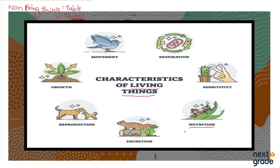The first characteristic is nutrition. Living things need food in order to perform their life processes. Food gives them energy, and every living organism needs food for their nutrition. For example, humans can eat plants and animals. Grasshoppers feed on plants. Plants take energy from the sun in order to make their own food.